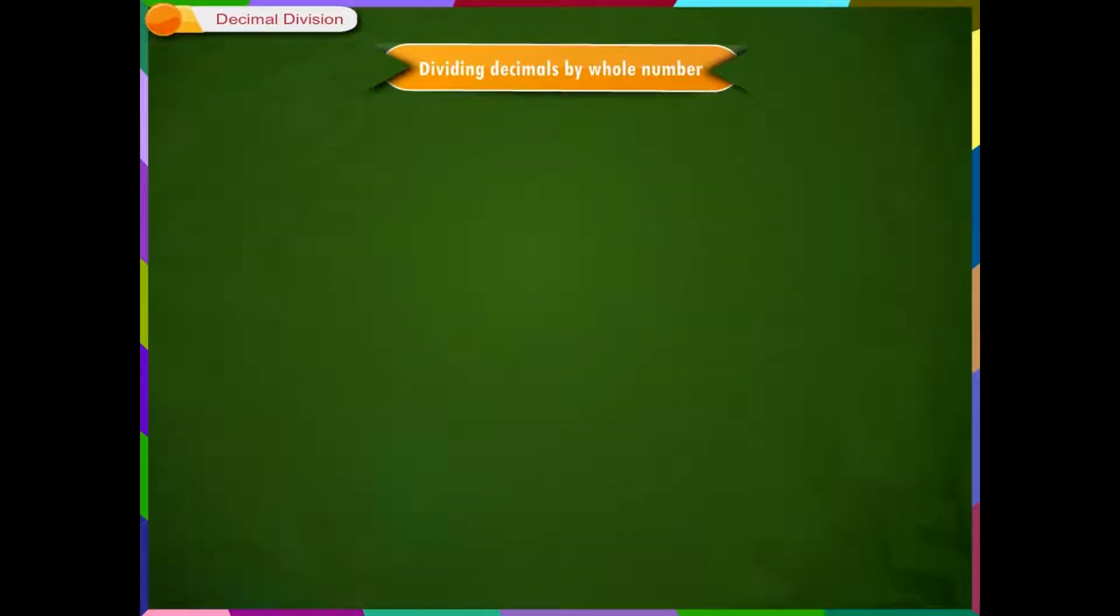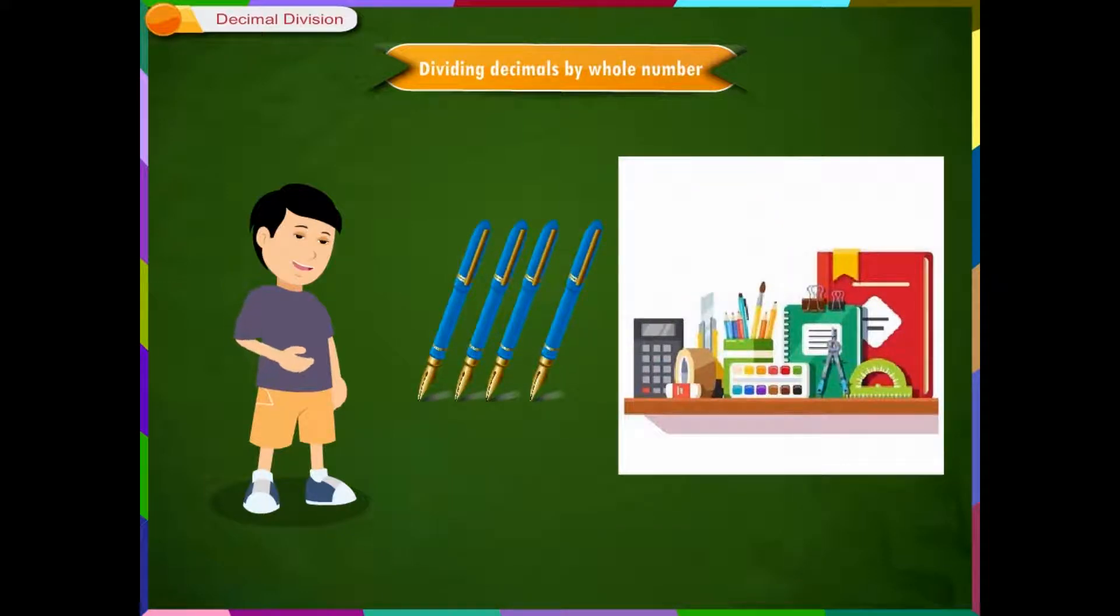Dividing decimals by whole number. Ram went to a shop and bought 4 pens for Rs. 35.50. He wanted to know the price of each pen. He will divide Rs. 35.50 by 4 to know the price of each pen. This is division of a decimal by a whole number.